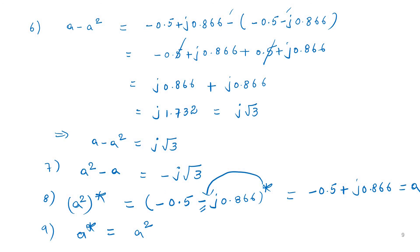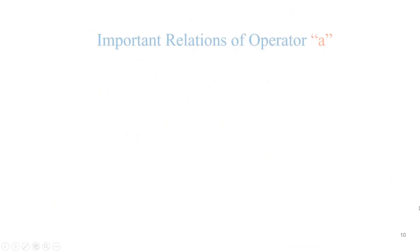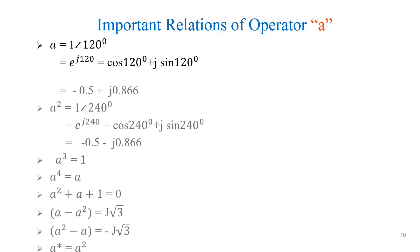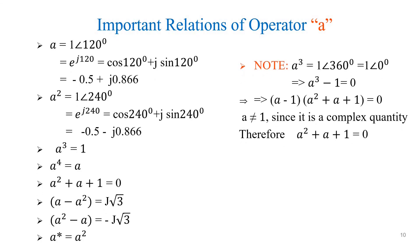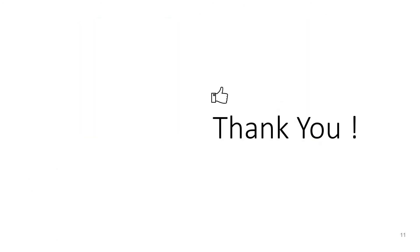These many equations we need to understand further concepts in a better way. You need not memorize all these values — just remember the one equation A = 1∠120°, and from that you can derive all these equations. So you can understand how we got the A² + A + 1 relation. These are very very important relations. Thank you.